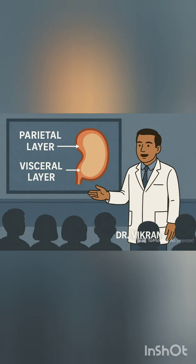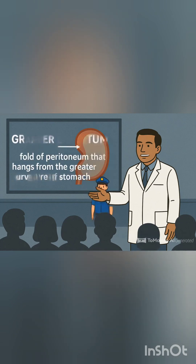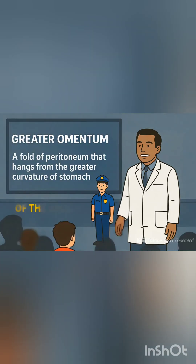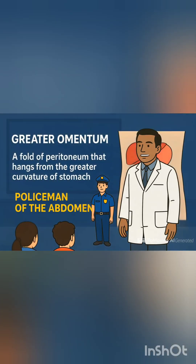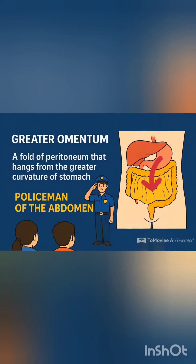When we open the abdomen, the first thing you will see is a large fold of peritoneum hanging down like an apron. This is the greater omentum, also known as the policeman of the abdomen. As you can see, this yellow color structure is the greater omentum.